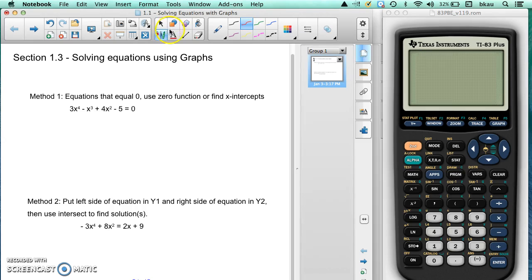There's two methods to solving using a graphing calculator. We can, if the equation's set equal to zero, we can graph it and look for the zero function or where the x-intercepts are. So let's take a look at this example right here and work that out.